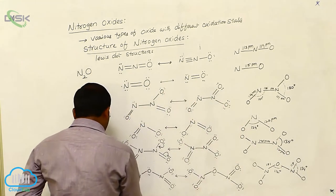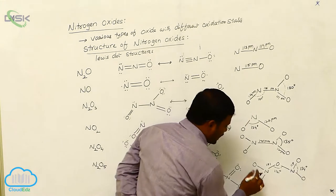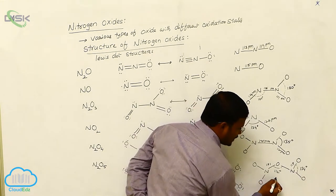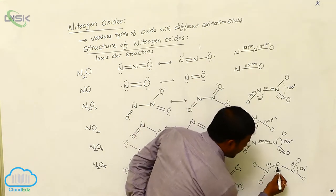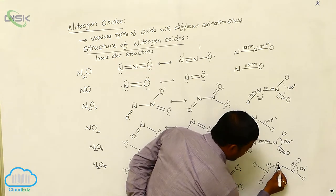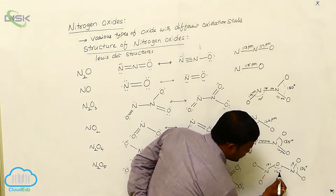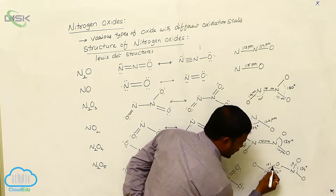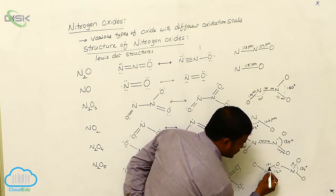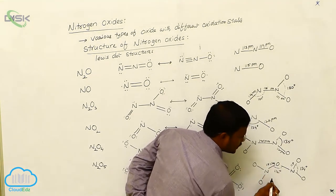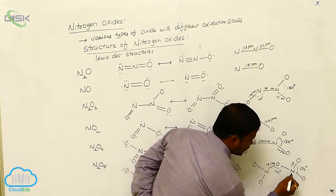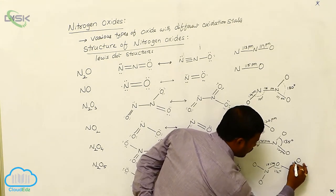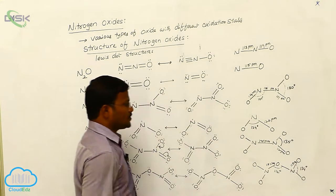In dinitrogen pentoxide, the expected bond angles and bond lengths are: the bond angle for the nitrogen-oxygen-nitrogen bond is 112 degrees, and the nitrogen-oxygen-oxygen bond is 134 degrees, whereas the N-O bond length is 151 picometers and the terminal N-O bond length is 119 picometers.